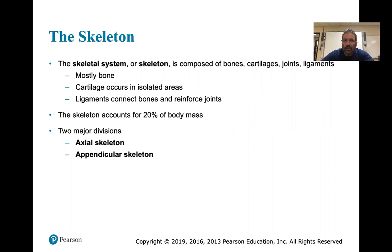The skeleton is mostly bone; cartilage occurs at isolated areas like costal cartilage and intervertebral joints. Ligaments connect bones and reinforce joints. If you sprain something it's generally ligaments; if you strain something it's generally muscle. Once ligaments are stretched, those elastin and fibrin tissues don't want to return to their original shape.